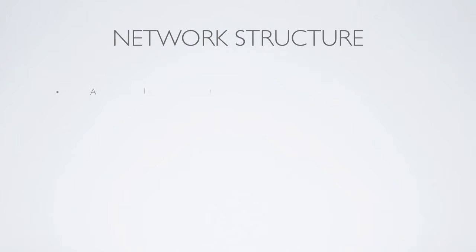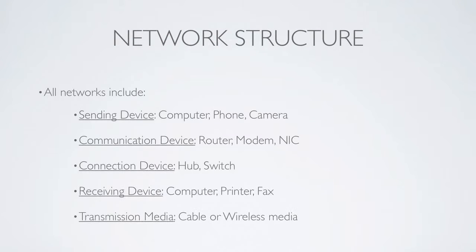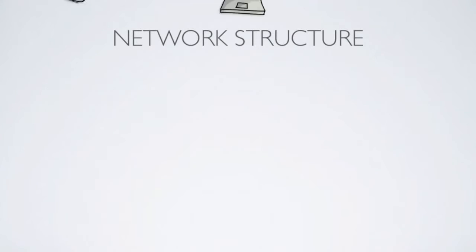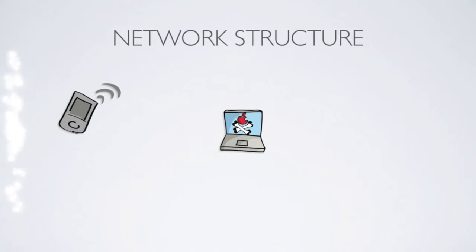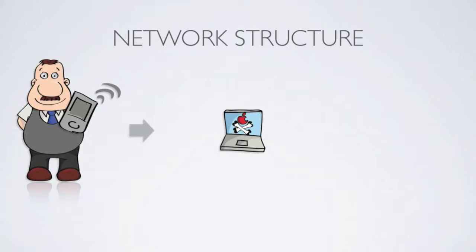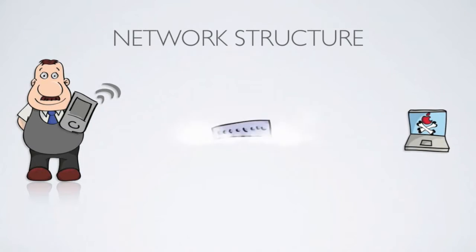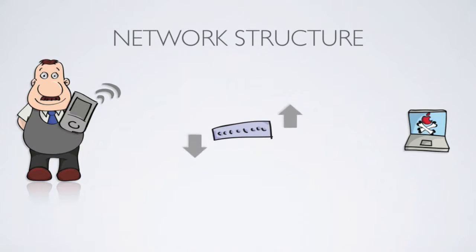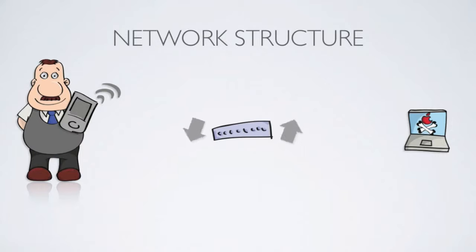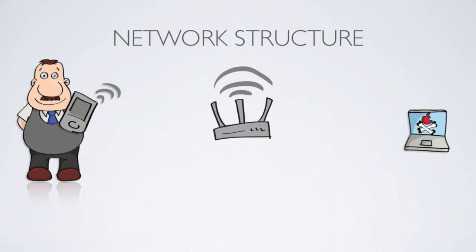Before we get into classification, we need to understand what constitutes a network by defining the network structure. All networks must include a sending device or receiving device, which the user can use to input commands to send data or request to receive data. They must also have a connection device, which connects all the network devices, essentially creating the network via transmission media. And a communication device, which addresses, translates, routes, and allows inter-network communication.